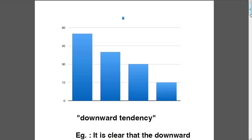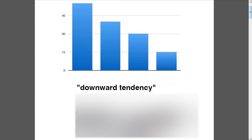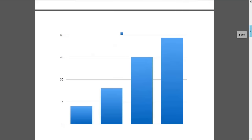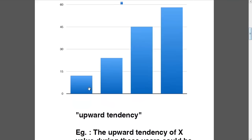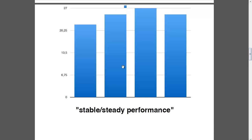If you see that a value steadily decreases — as in this case where the value is falling gradually — then you can use the phrase 'downward tendency.' If you have a value that gradually increases over a period of time, as this one, you can use the phrase 'upward tendency.'